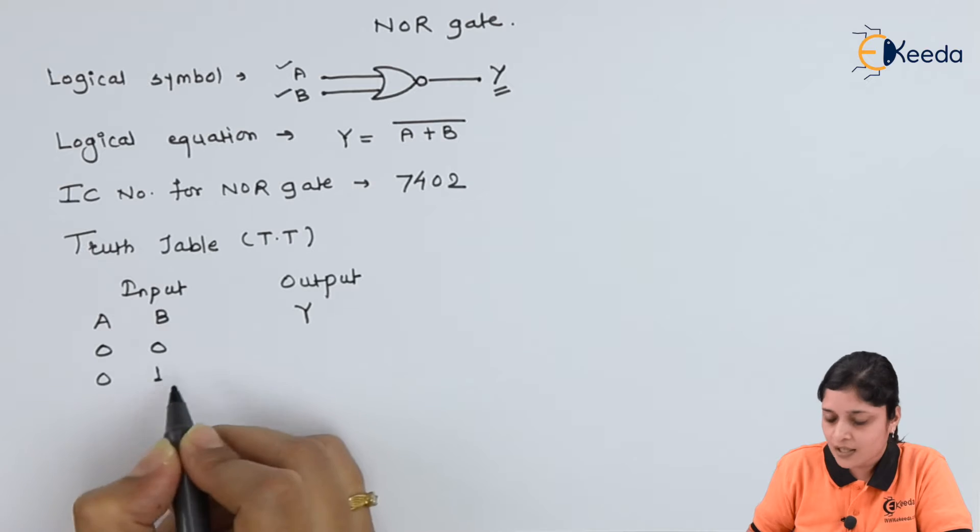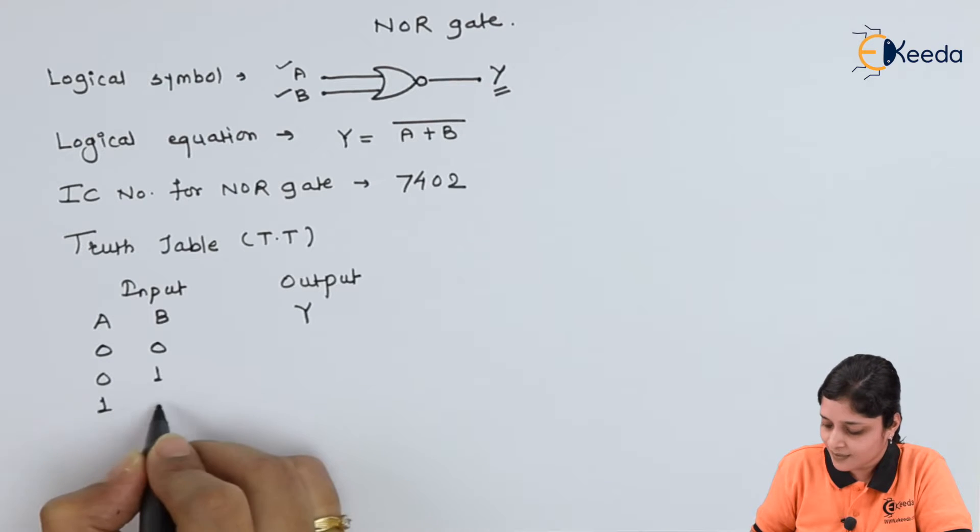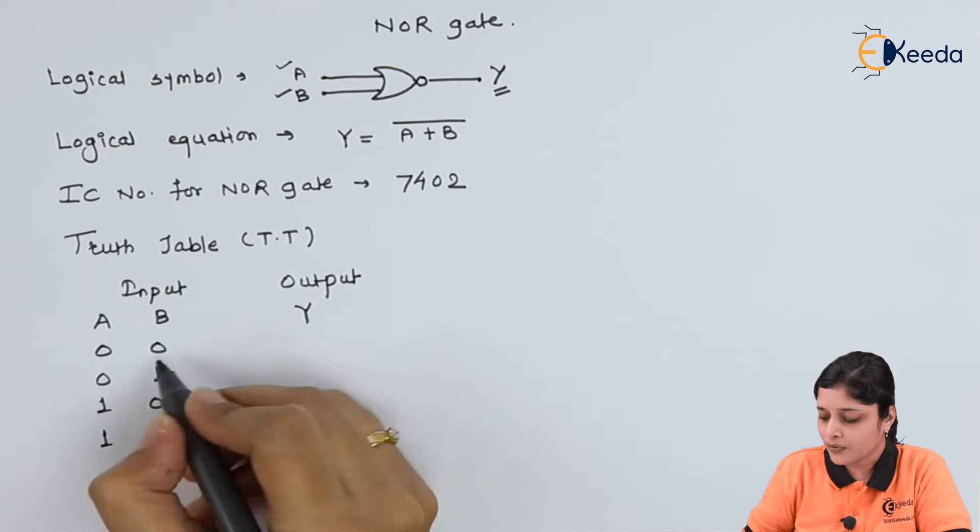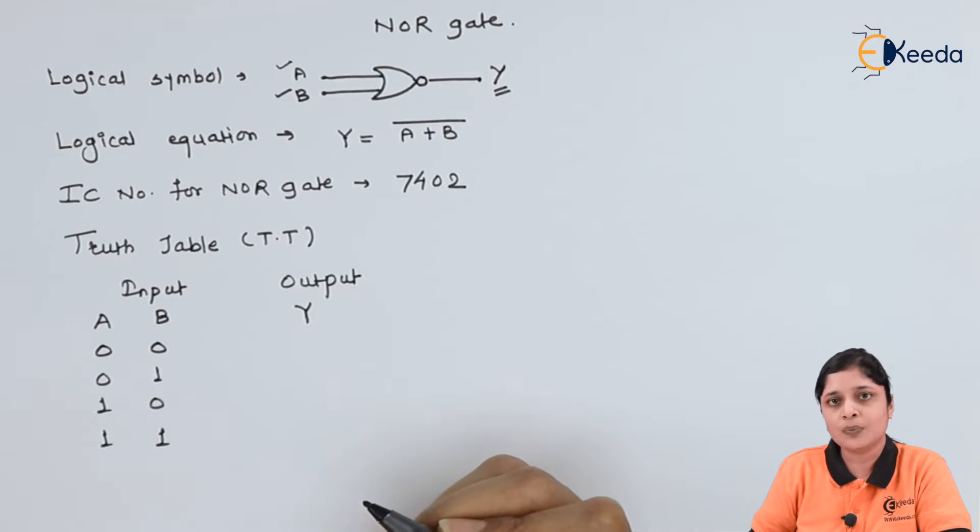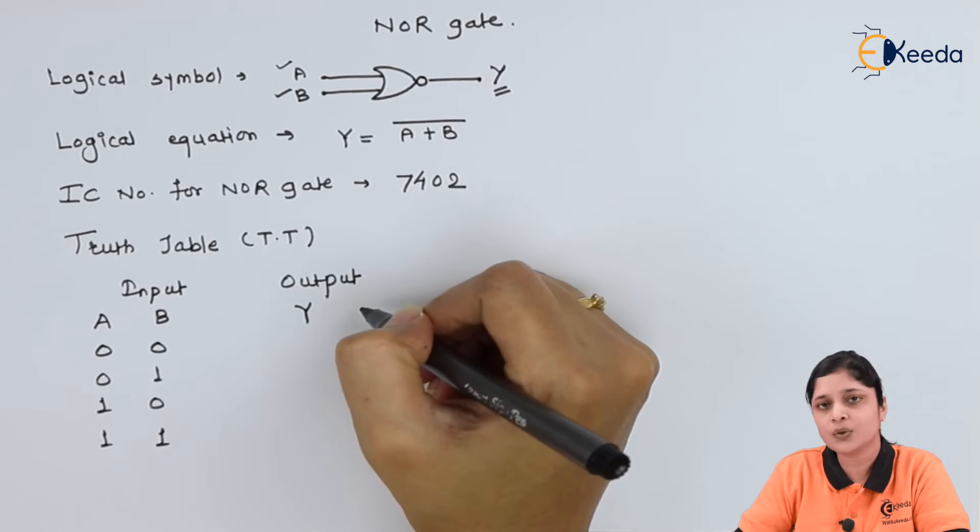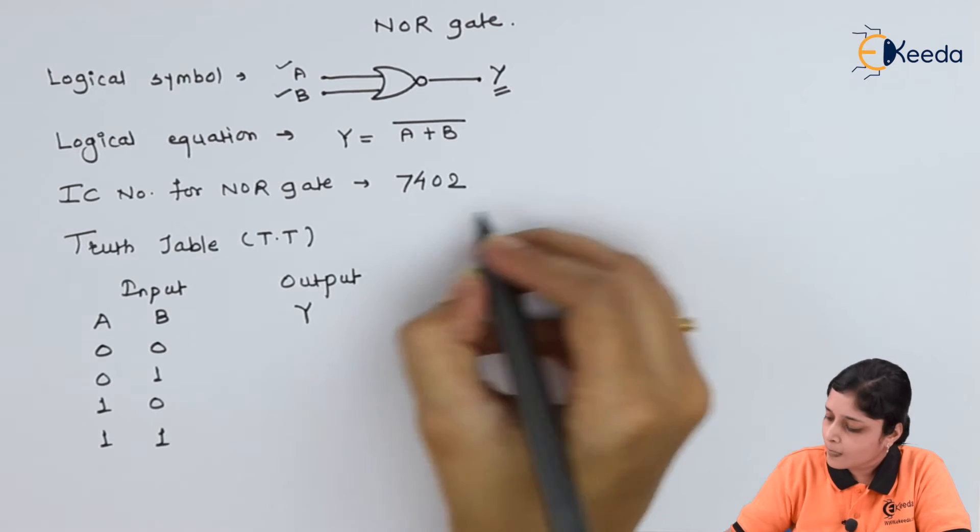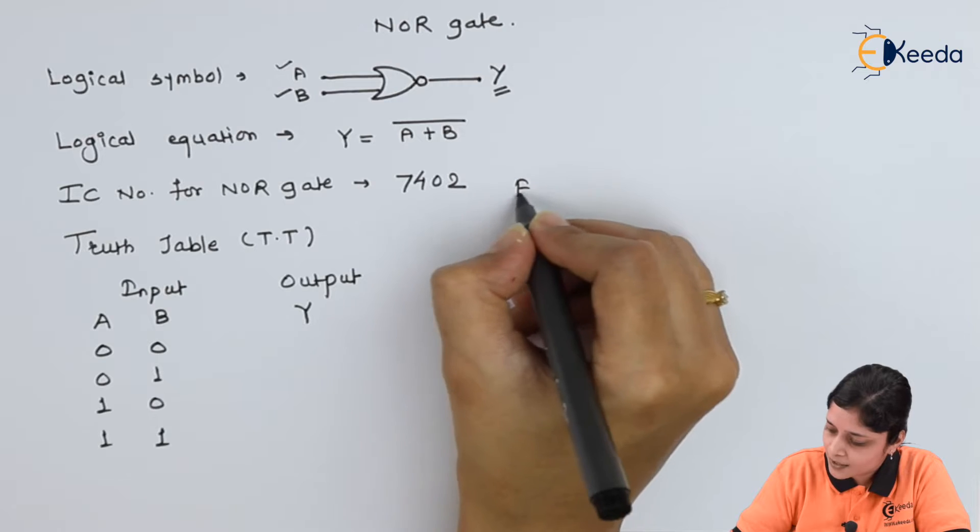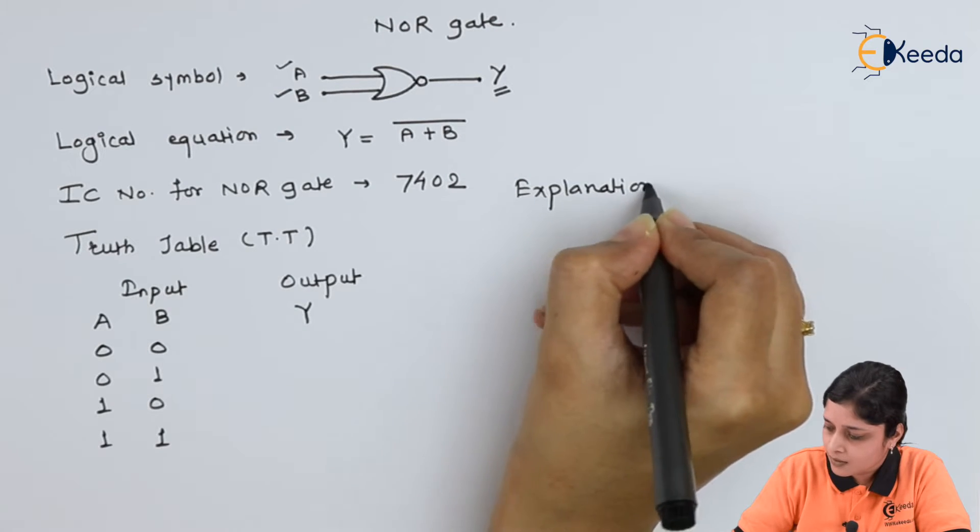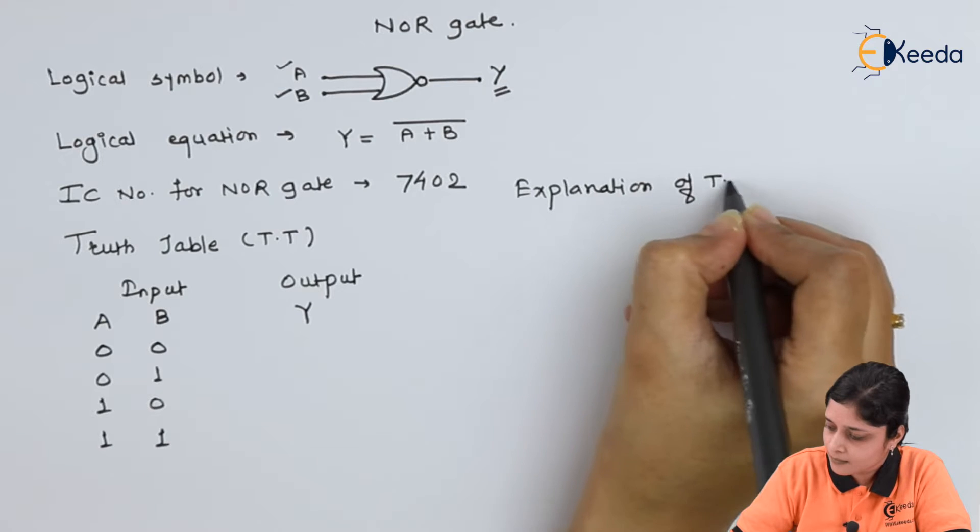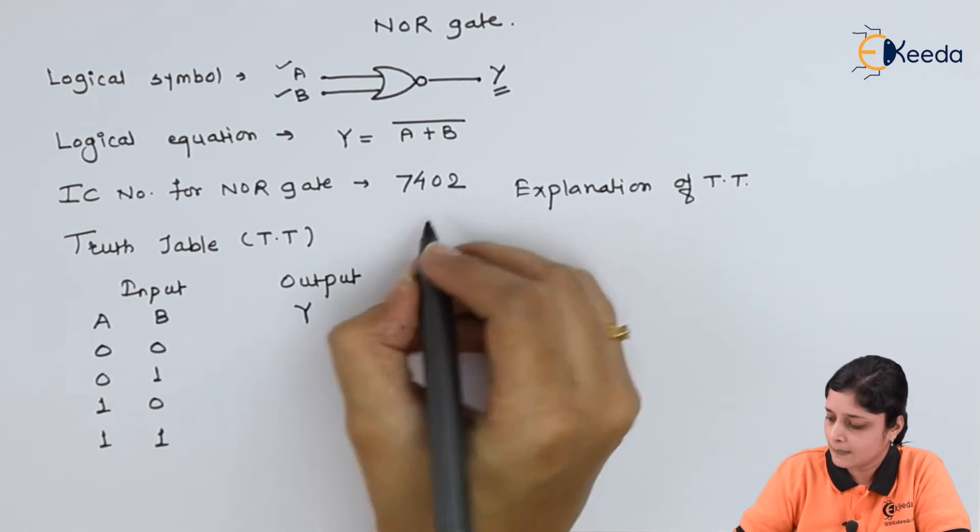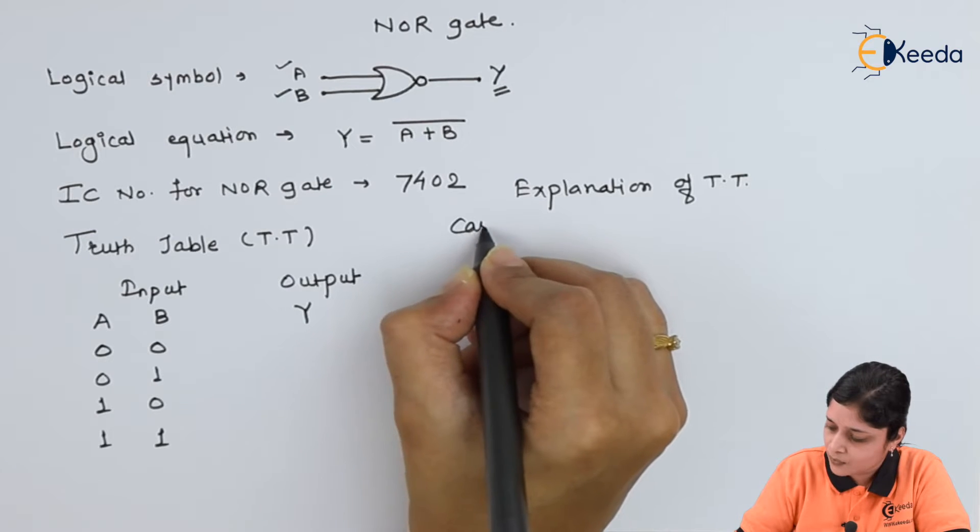0-0, 0-1, 1-0, and 1-1. One by one we are going to put the values of input inside the logical equation and then only you will get its output. So let's start with the explanation equation of truth table. Now I will write T.T. means truth table. Case 1.